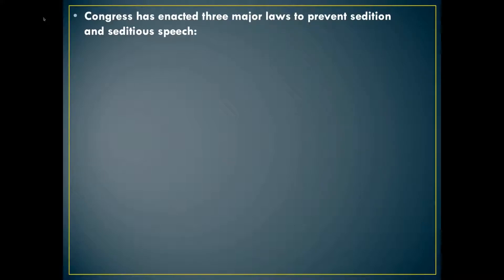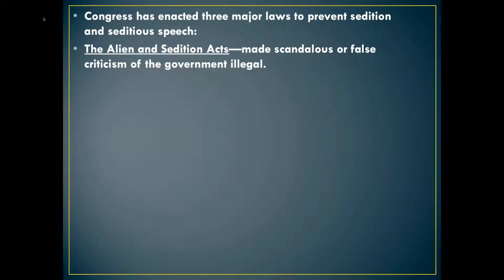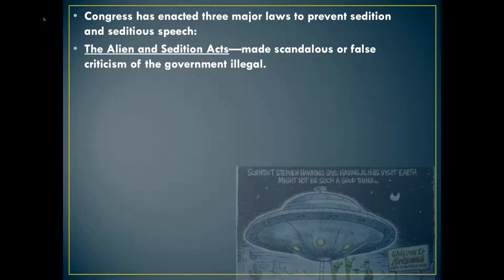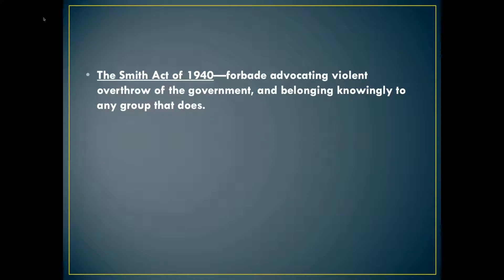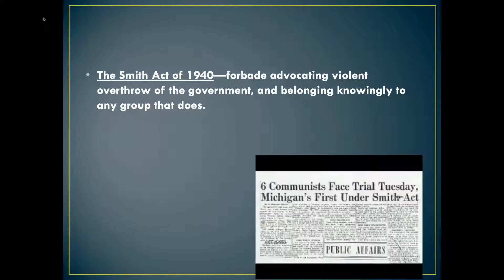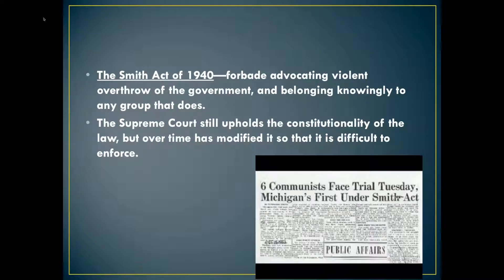Congress enacted three major laws to prevent sedition over the years. The first Sedition Act was introduced by John Adams and was later declared unconstitutional, but variations have appeared over the years. Scandalous and false criticism of government is illegal. The Sedition Act of 1917 made it a crime to encourage disloyalty or spread anti-government ideas during a time of crisis — upheld by the Supreme Court on clear and present danger grounds, going back to Schenck. The Smith Act prohibited advocating violent overthrow of the government and belonging to groups that do, like a communist party or terrorist organization, though it is very difficult to enforce.